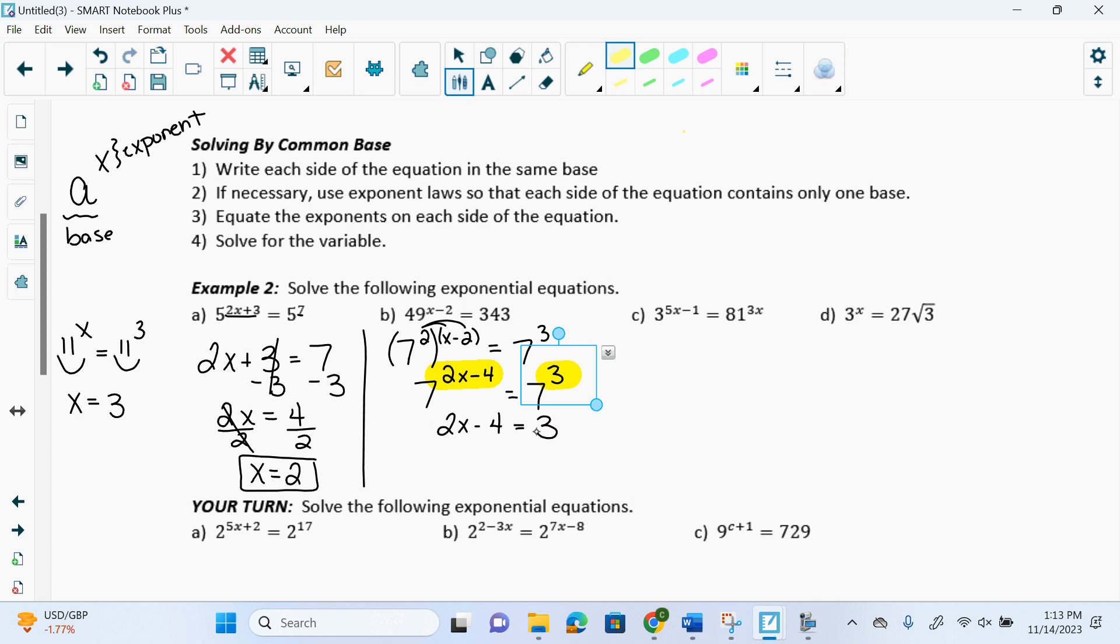Then what do I do? Add 4. 2x equals 7. And then? Divide by 2. x equals 7 over 2.